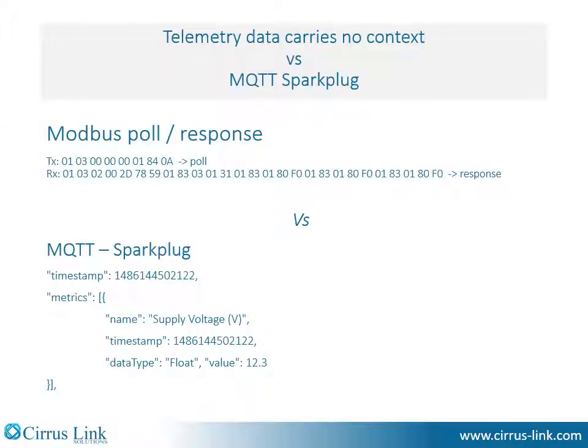Now we're going to take a look at some of the specific benefits of MQTT Sparkplug. The Modbus protocol uses cryptic encoded numbers where you don't know what the data represents. It's typically scaled as a 16-bit analog value which represents a range with some unknown units. Versus within MQTT Sparkplug, the data is 100% self-discovered, with a meaningful tag name and scaled values along with units.